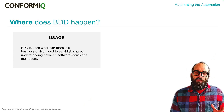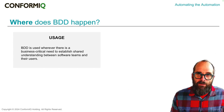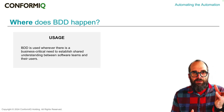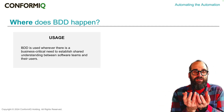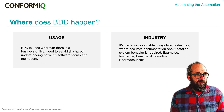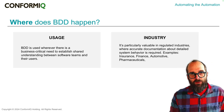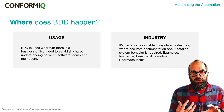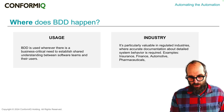BDD tends to happen most in industries where the understanding between the people with the money and the problems, and the people with the technical know-how, is really business critical. For example, that might be regulated industries like finance or pharmaceuticals, or ones with complicated business rules like insurance companies, where it's really important to have non-technical people involved in understanding the details of the logic being implemented in the code.